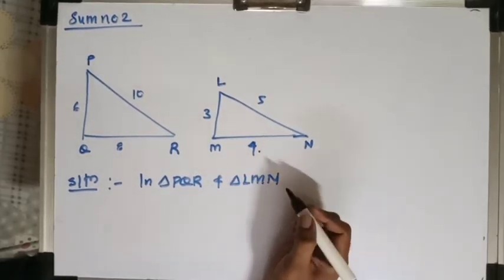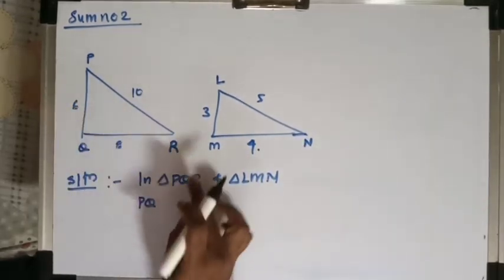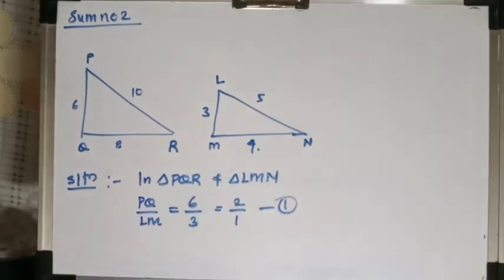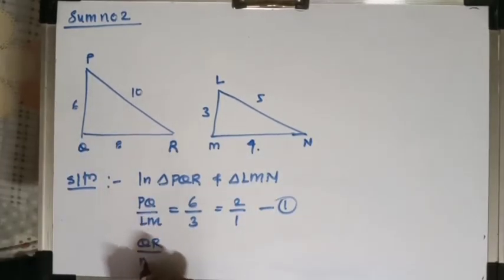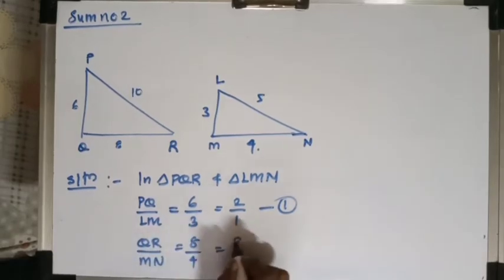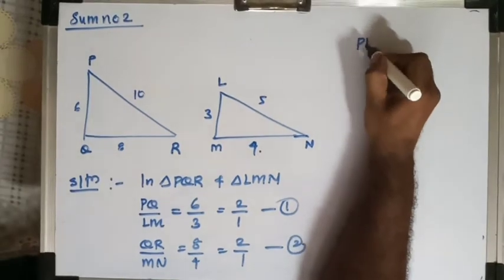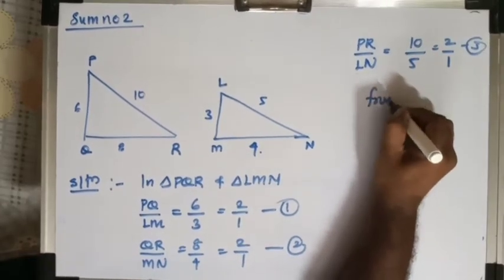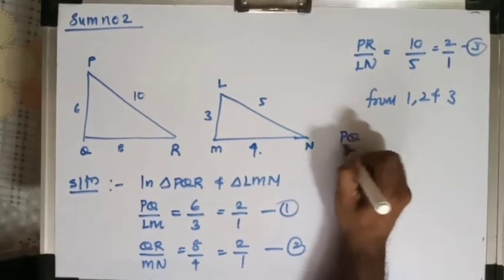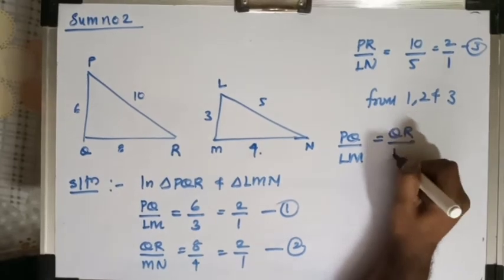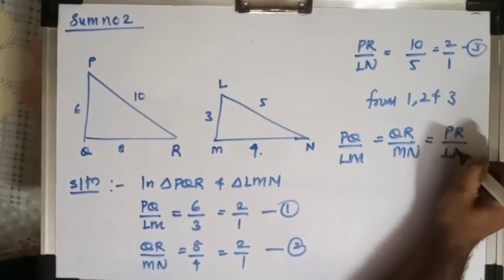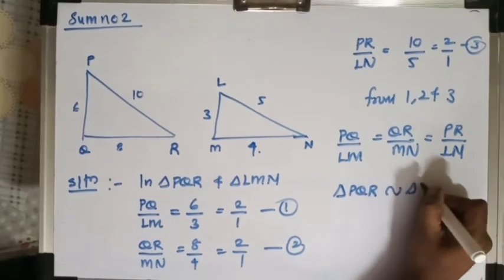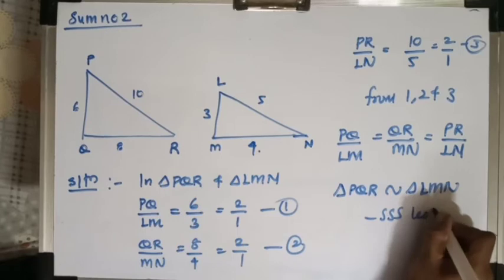PQ upon LM equals 6 upon 3, which is 2 upon 1 — call this (1). QR upon MN equals 8 upon 4, which is 2 upon 1 — call this (2). PR upon LN equals 10 upon 5, which is 2 upon 1 — call this (3). From (1), (2), and (3), PQ upon LM equals QR upon MN equals PR upon LN. Since all three sides are in proportion, the triangles are similar by the SSS test of similarity.